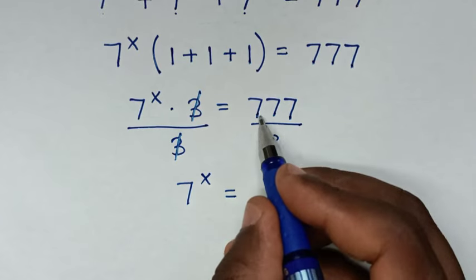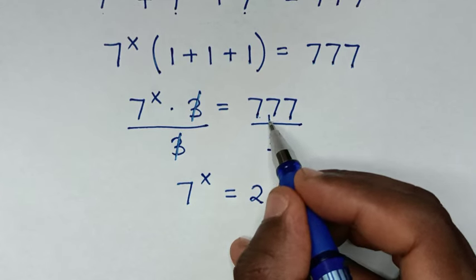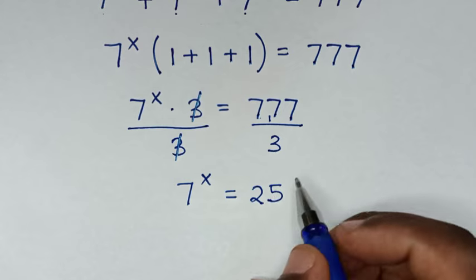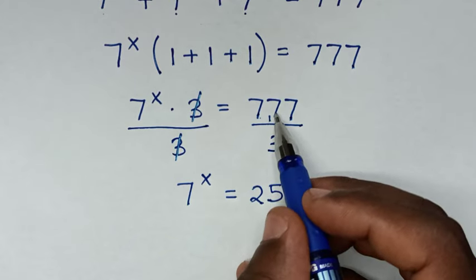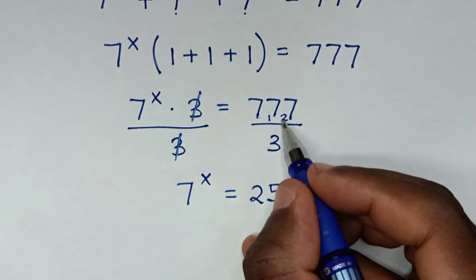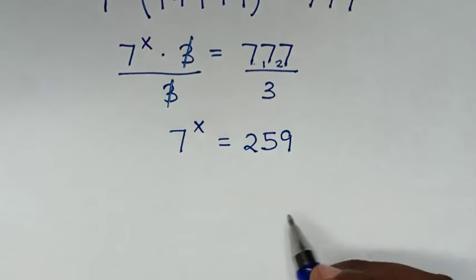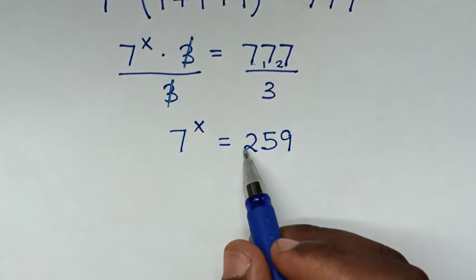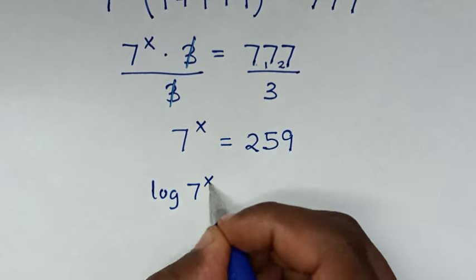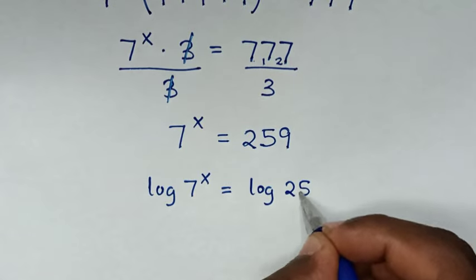Computing 777 divided by 3: 7 divided by 3 gives remainder 1, 17 divided by 3 is 5 remainder 2, and 27 divided by 3 is 9. So 777 divided by 3 equals 259. Then we apply log on both sides, so it will be log of 7 power x is equal to log of 259.